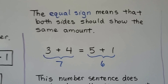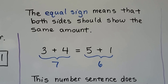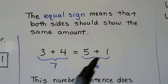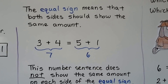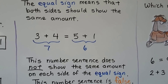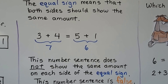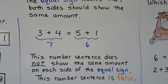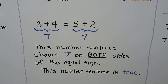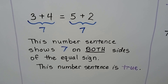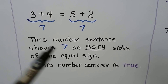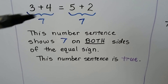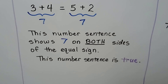The equal sign means that both sides should show the same amount. 3 plus 4 is equal to 7, and 5 plus 1 is equal to 6. This number sentence does not show the same amount on each side of the equal sign, so this number sentence is false. 3 plus 4 is not equal to 5 plus 1. However, 3 plus 4 is equal to 5 plus 2, because 3 plus 4 equals 7 and 5 plus 2 equals 7. This number sentence shows 7 on both sides, so it is true.